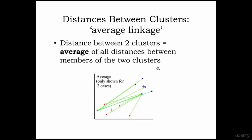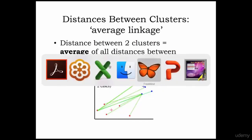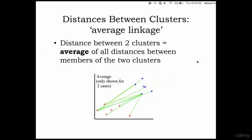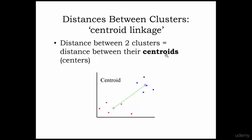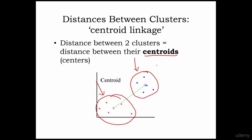The third thing is average linkage. Average linkage means you calculate the distance between all the records available between the two clusters — this to this, this to this, this to this — all the values, and you take a simple average of the distances to get the distance between the two clusters. You also have centroid linkage — you calculate a centroid for each cluster and then calculate the distance between those centroids. That's centroid linkage.